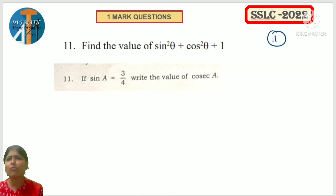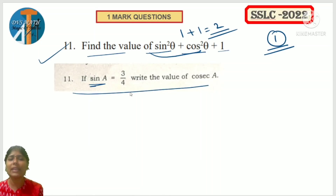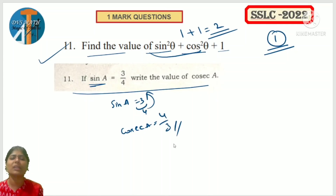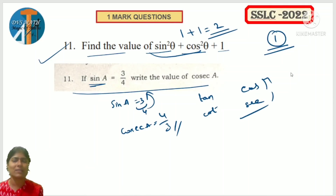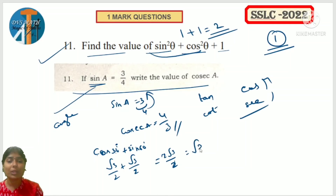Going for next one - compulsory one question from Trigonometry. MCQ, definitely one mark. Define the value of sin²θ plus cos²θ plus 1 - that is 1 plus 1 equals 2. If sin A equals 3/4, what is cosec A? It is the reversal, so 4/3. Also, what is the value of cos 30° plus sin 60°? cos 30° is √3/2, sin 60° is √3/2, so you get √3.